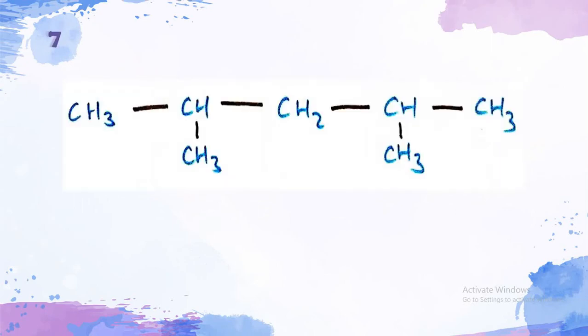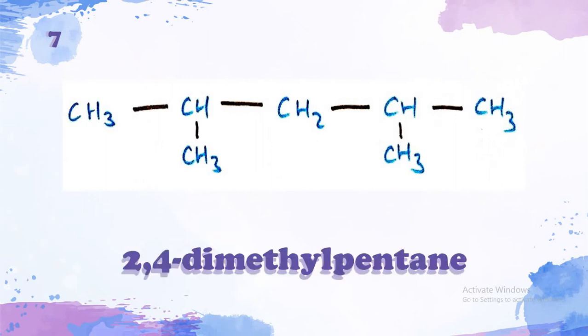Let's move to the seventh isomer. The seventh isomer has 2 methyl branches at the second and the fourth carbon atom of its main chain which is a pentane. So, it's called 2,4-dimethyl pentane.